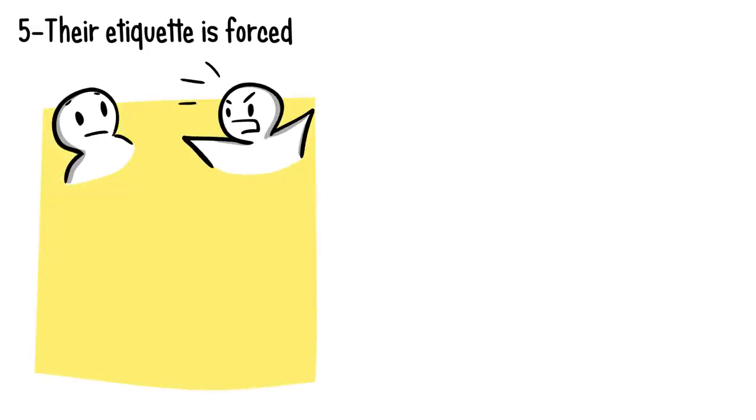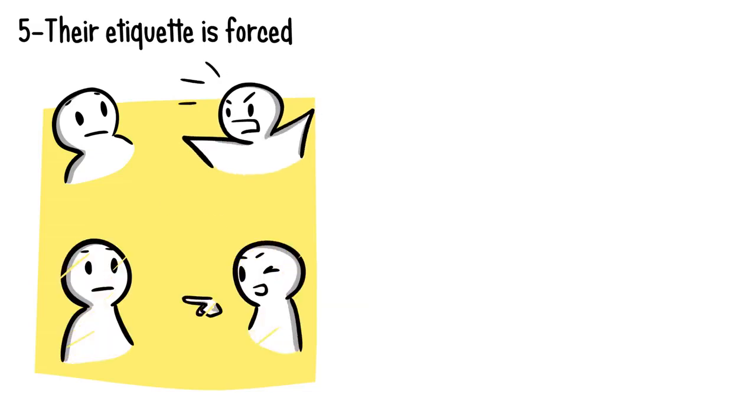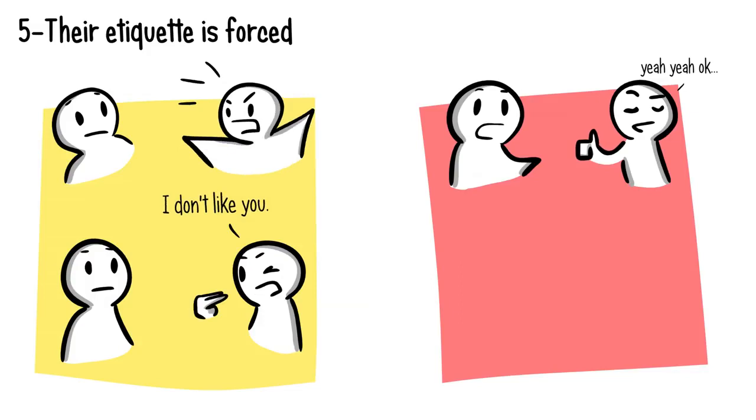Number five: Their etiquette is forced. When someone outwardly dislikes you, they will be loud about it, whether it's lashing out on you regularly or telling you to your face. When they secretly dislike you, however, they might try to get along just to avoid conflict.